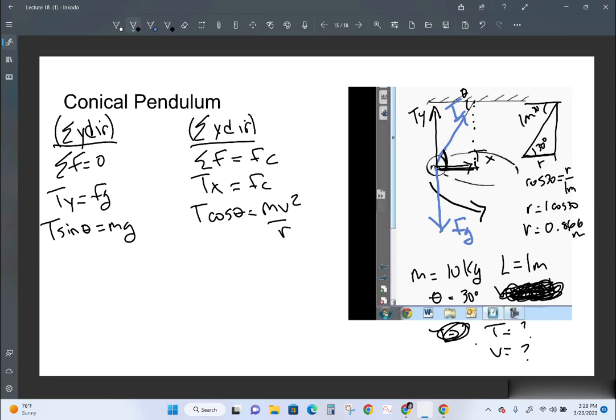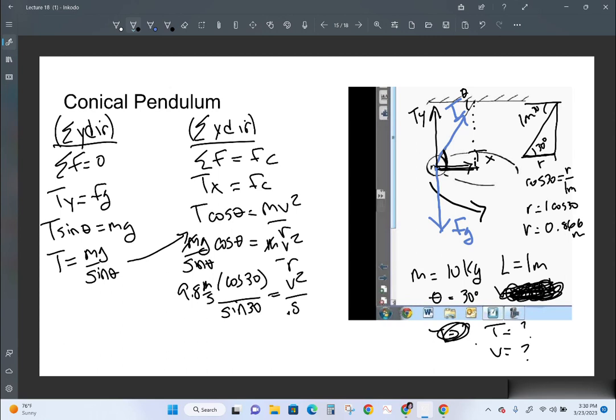So the first thing I'm going to do is I'm going to solve for T over here. There's M G sine theta. And I'm going to put it in over here. So this is going to be M G sine theta times cosine theta equals M V squared all over R. The M's are going to go away. And so now I can just plug and chug. I can say 9.8 meters per second squared times cosine of 30 divided by sine of 30 equals V squared all over 0.866 meters.